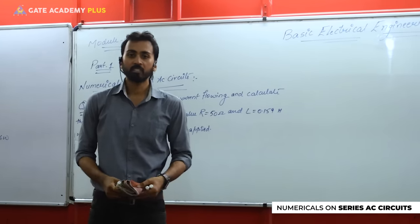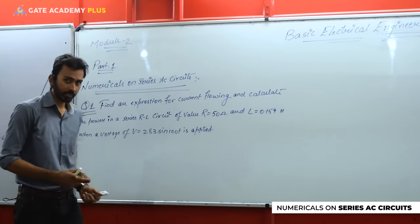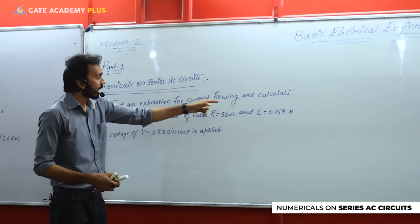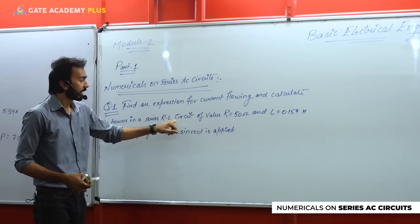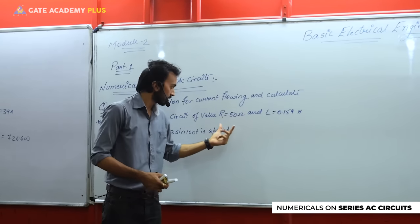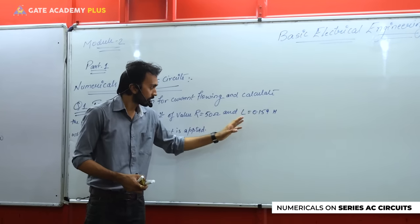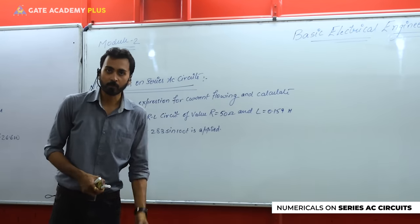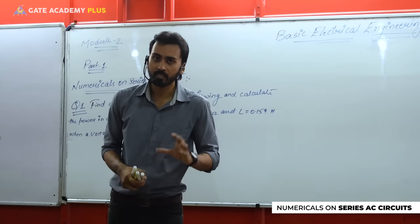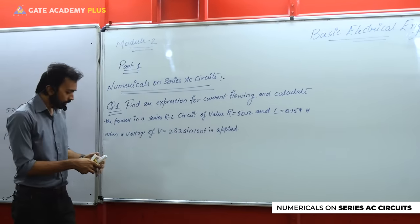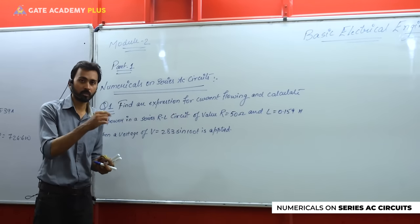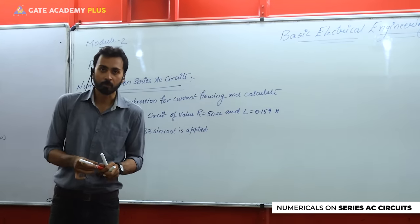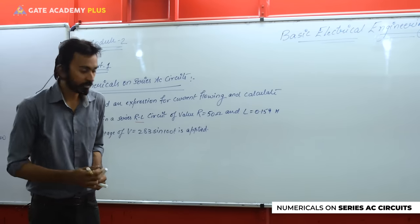Let us start the first numerical of series AC circuits. I'll quickly read it for you. The question says: Find an expression for the current flowing and calculate the power in a series RL circuit, where the value of resistance is 50 ohms and inductance is 0.159 henry, when a voltage of V = 283 sin(100t) is applied to the circuit. The most important thing here is which elements are connected — it is an RL circuit, meaning resistance and inductor.